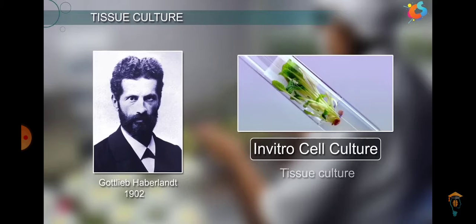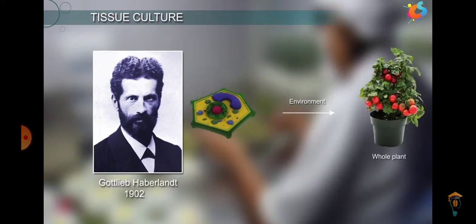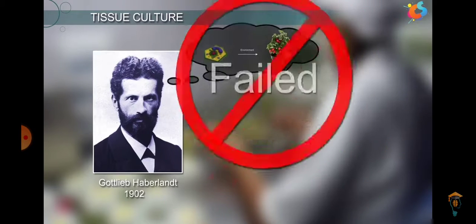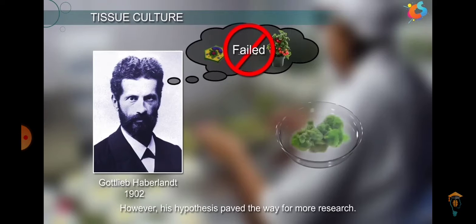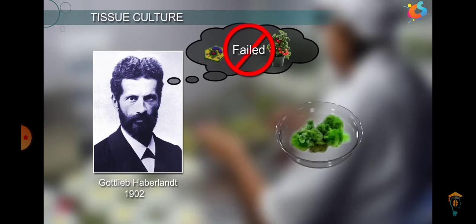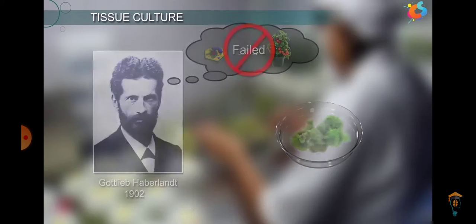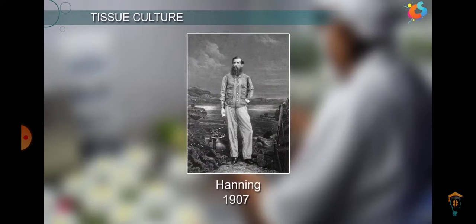Gottlieb Haberlandt, in 1902, cultured the cell. He carried out in vitro culture; he was able to grow the cells and increase them in size, but failed to carry out cell division. However, his hypothesis paved the way for more research. Therefore, he is regarded as the father of tissue culture.